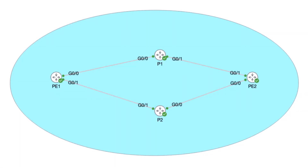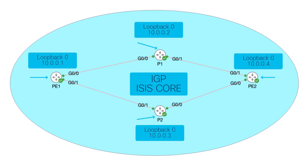The following represents the fundamental topology utilized in the lab. All devices run iOS XR. From left to right, you see a Provider Edge router PE1, two core devices P1 and P2, and a second Provider Edge router PE2. All devices are pre-configured with ISIS as their IGP and with loopback addresses advertised through ISIS.